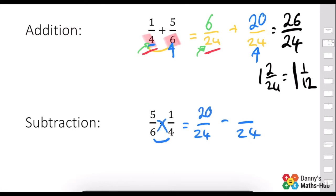We'd do the 6 times 1 to give us 6. 20 take away 6 is 14 over 24, which can be simplified down to 7 over 12.